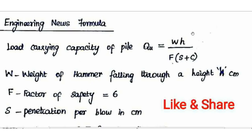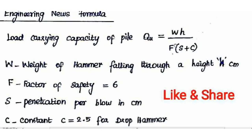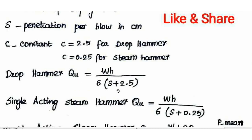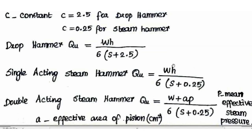The weight of the hammer is W in kN. For a double-acting steam hammer, Q equals W plus AP, divided by 6 times the quantity S plus 0.25, where A is the piston area in cm² and P is the mean effective steam pressure. The factor of safety is 6, and S is the penetration per blow in centimeters. These are the three types of hammer formulas used in pile driving.